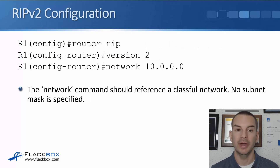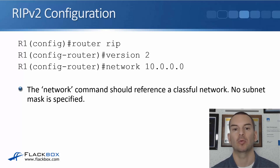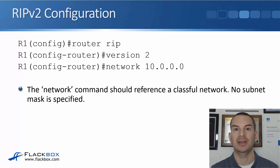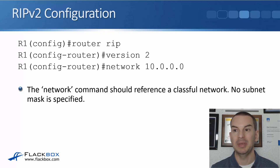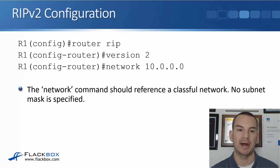To configure RIP, at global config we say 'router rip', and then optionally 'version 2' — we do want to be running the latest version. To specify the interfaces that RIP runs on and the networks to be advertised, we use the 'network' command. In this example, 'network 10.0.0.0' means all interfaces beginning with 10 will send out RIP hello messages and try to form an adjacency, and all 10 networks will be advertised. The network command should reference a classful network, and no subnet mask is specified.